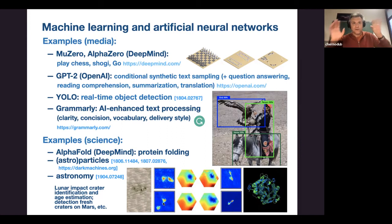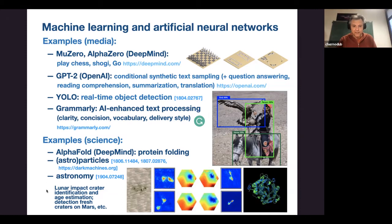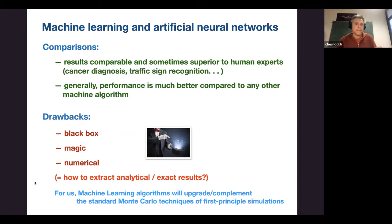Hubble and other observatories like Chandra make photographs of space in different bands — gamma rays, X-rays — and machine learning can classify what is seen there. Recently it was used for lunar impact crater identification and age estimation, and detection of fresh craters on Mars by NASA. In general, results are compatible with and sometimes superior to human experts — machine learning can be much faster and superior in recognition compared to any classical clustering algorithm.